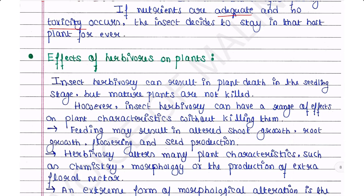Effects of herbivores on plants: insect herbivory can result in plant death in the seedling stage, but mature plants are generally not killed. However, insect herbivory can have a range of effects on plant characteristics without killing them — feeding may result in altered shoot growth, root growth, flowering, and seed production.